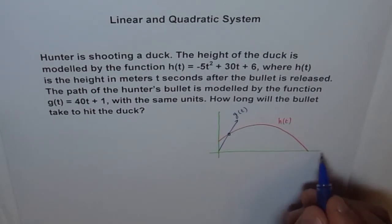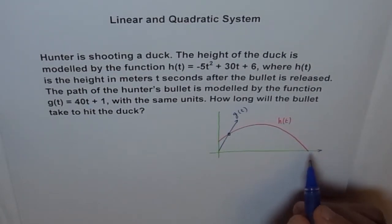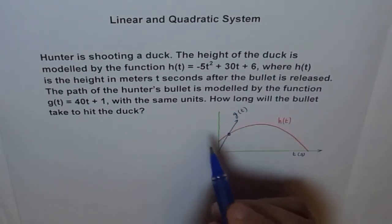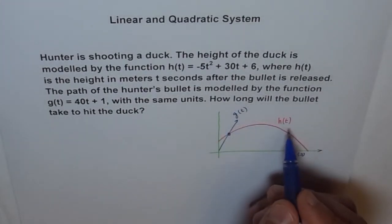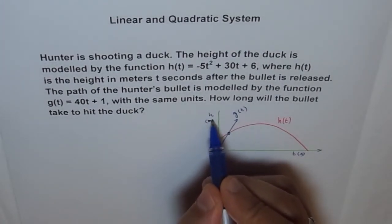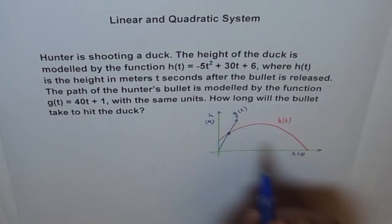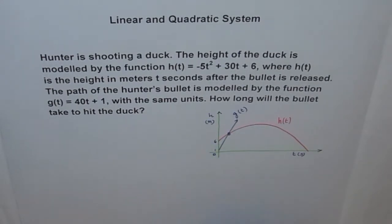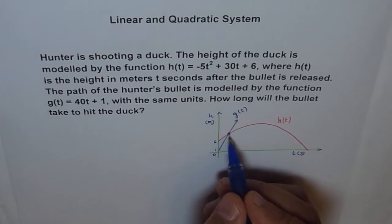Now here, you can write this as time in seconds. So we get time in seconds. And this is height, whether it's this function or that function, but height in meters. So that's what they mean by same units. And here we know this should be 1 and this should be 6. This kind of a graph.